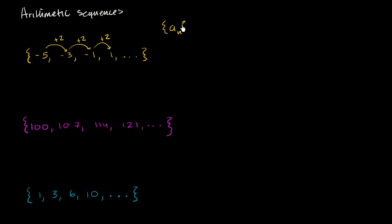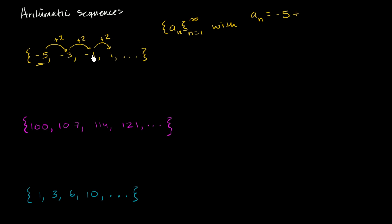There are several ways we could define the sequence. We could say it's a sub n, using n to denote our index, from n equals 1 to infinity. If we wanted to define it explicitly, we could write: a sub n is equal to negative 5 plus 2 times (n minus 1). We're adding 2 one less time than the term we're at — for the second term we add 2 once, the third term twice, and so on. This is an explicit definition of this arithmetic sequence.